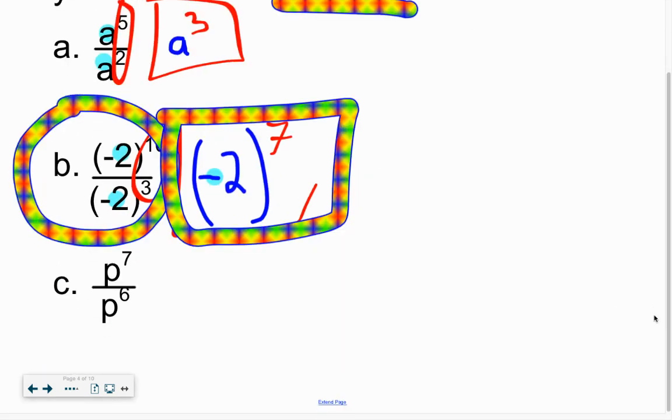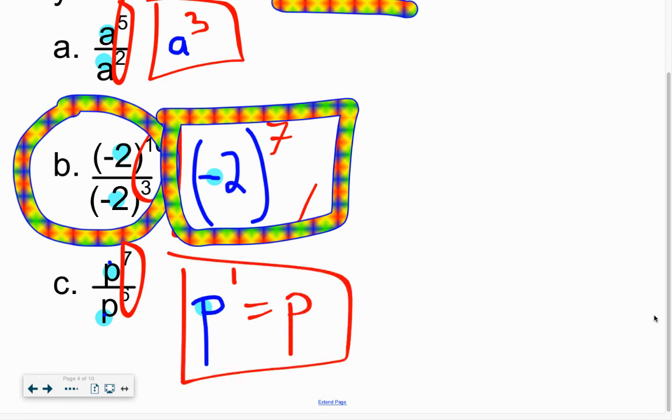And then one last one. Here you go. If it's got the same base, so those same letters, the same bottom ones, you write that, and then just subtract these. 7 minus 6 gives us a 1, which is P to the 1, or you could just tell me that that is P. I will accept either of those.